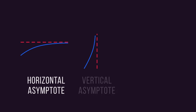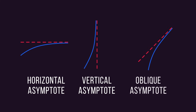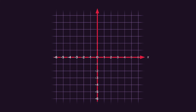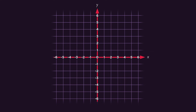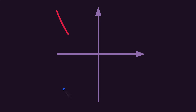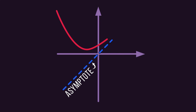Asymptotes can come in one of three shapes. What is the equation of this horizontal asymptote? Y equals three. And what is the equation of this vertical asymptote? X equals three. Oblique asymptotes are when the graph approaches a diagonal line, but never actually touches it.